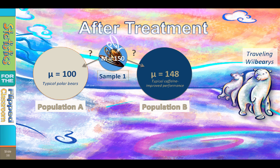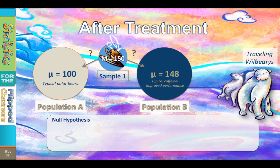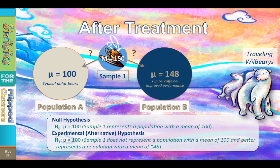So which is more likely? Does the sample mean of 150 more likely represent the population from which it was drawn, or the population expected if caffeine improves performance by 48%? This is about hypothesis testing, so let's examine those hypotheses. The null hypothesis states that sample 1 represents a population with a mean of 100. We would write that as H sub 0: mu equals 100.